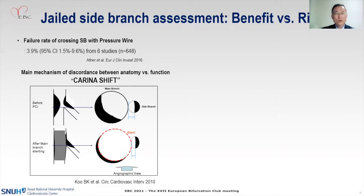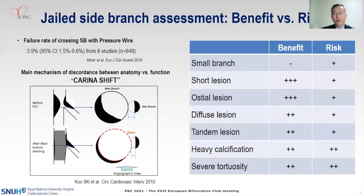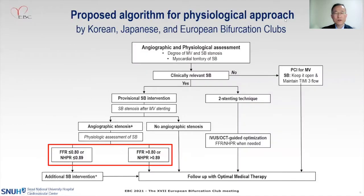For jailed side branches, the reported failure rate is on average around four to five percent, and the mechanism of failure is mainly at the ostium of the side branch. So we recommend assessing the balance of benefit and risk: benefit is higher in short ostial lesions, and risk can be higher in heavily calcified and severely tortuous vessels. You have to make this individual balance for all your patients before performing any physiological assessment.